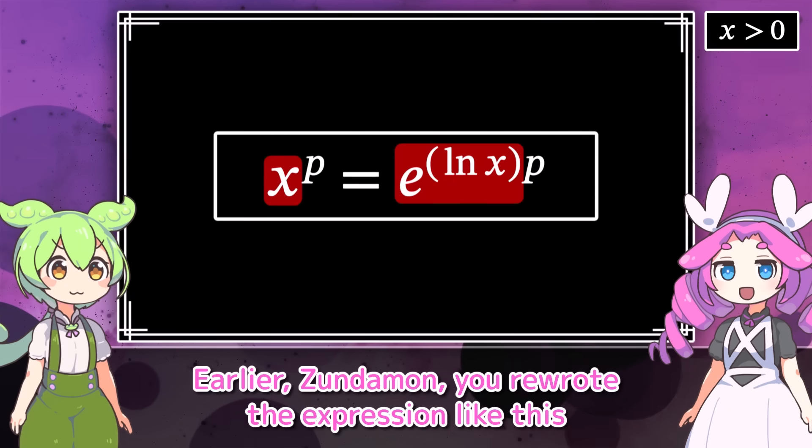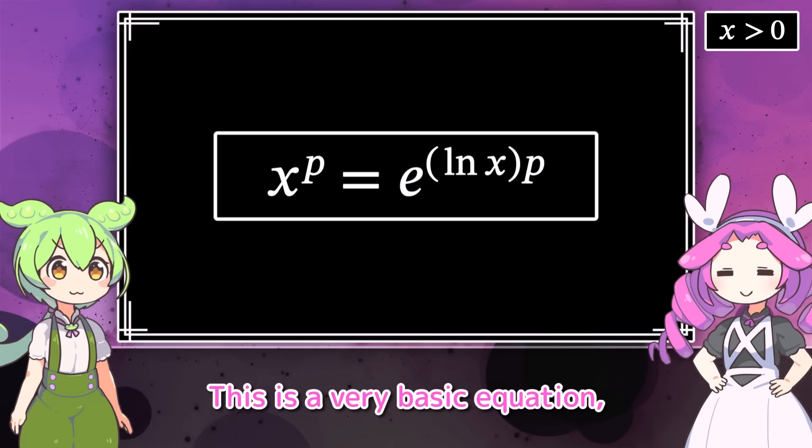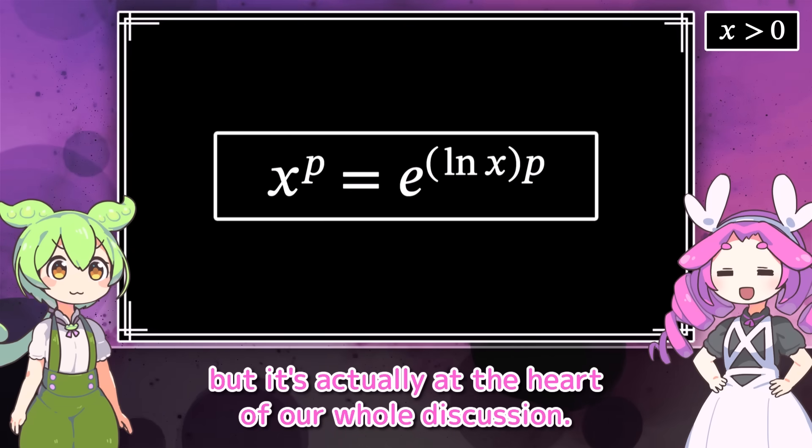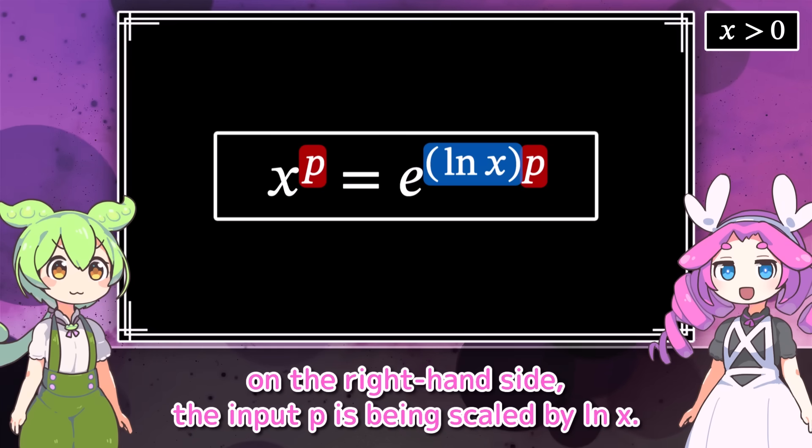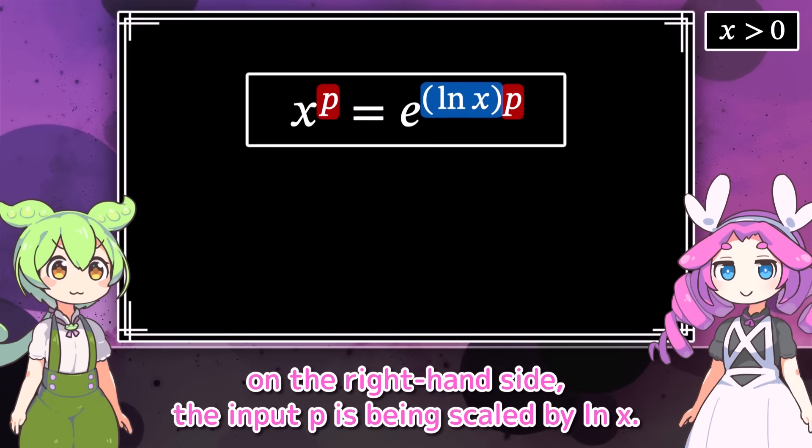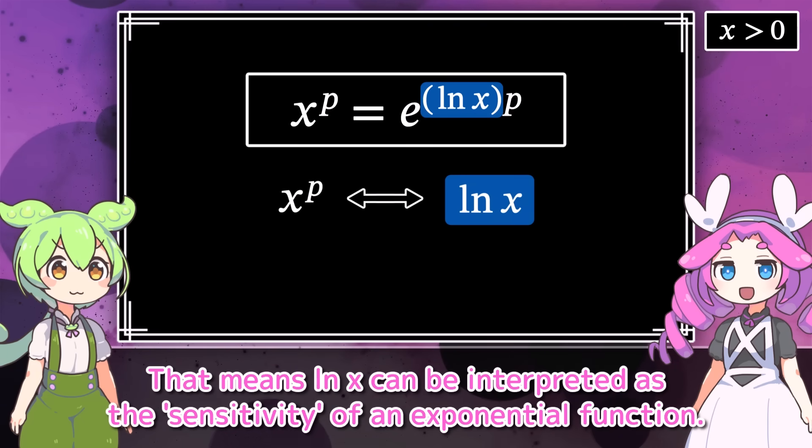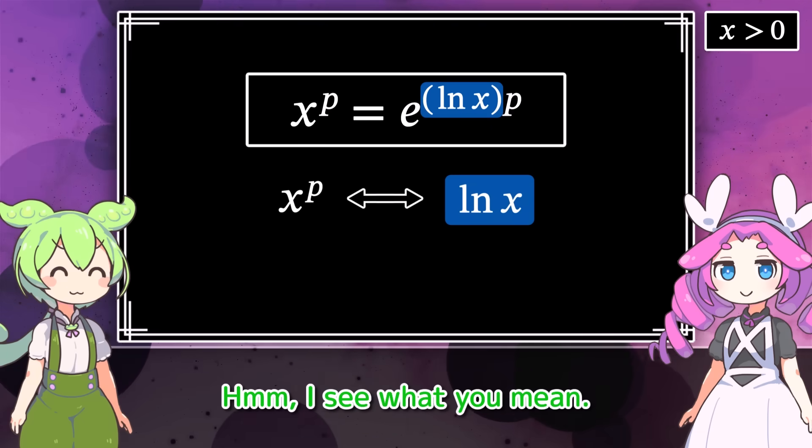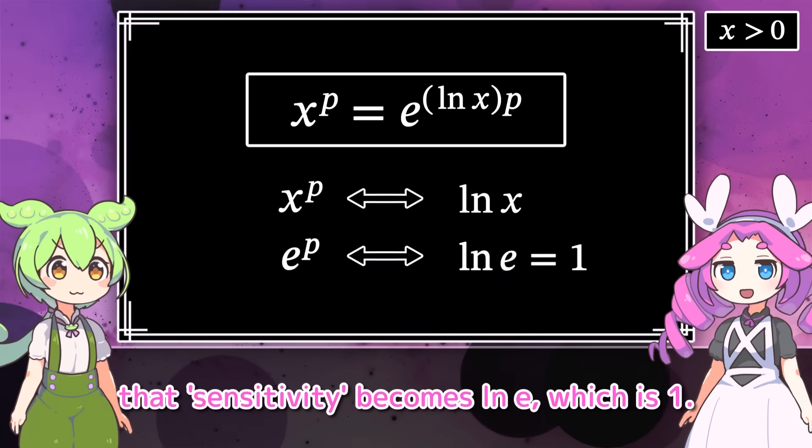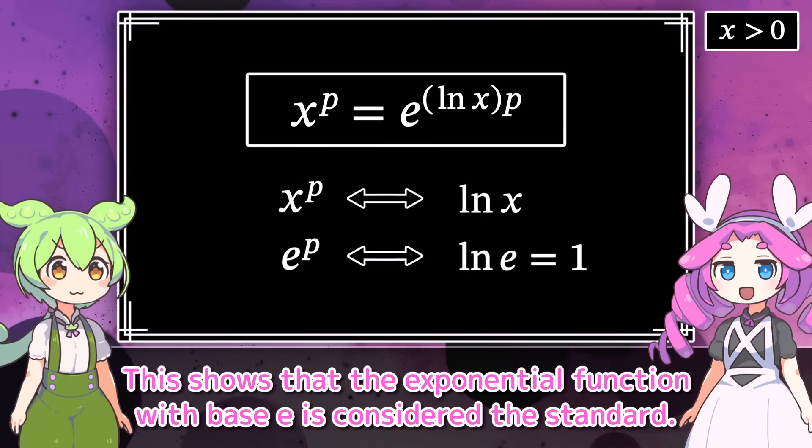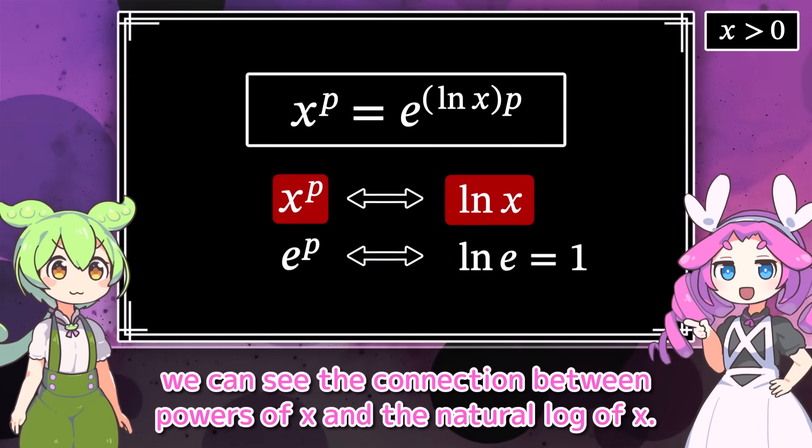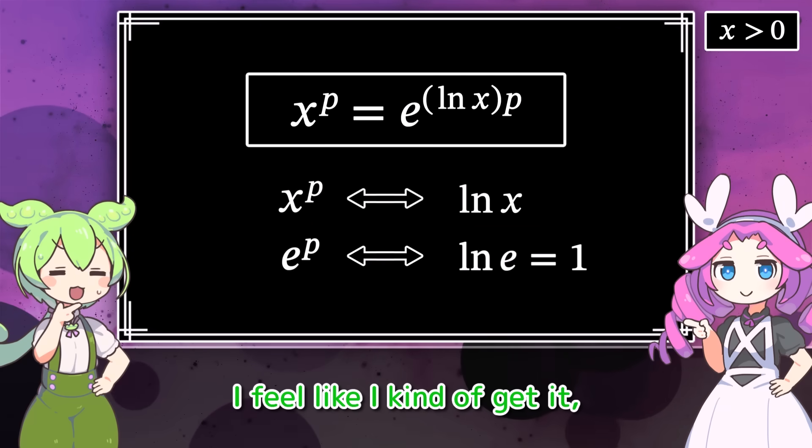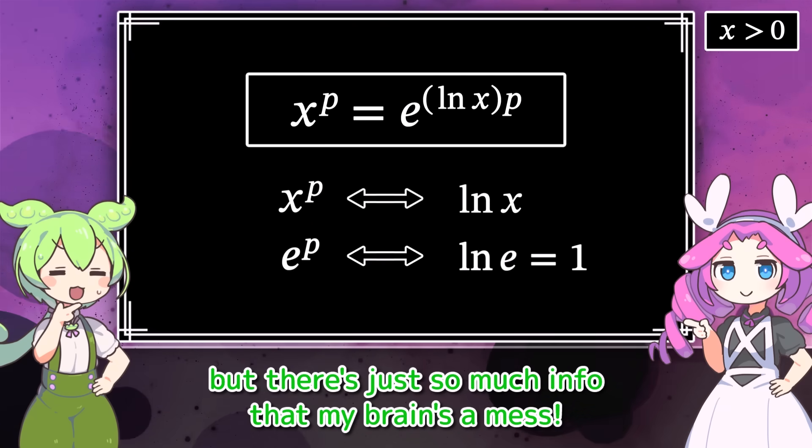Wait, was that a mistake? No, actually that's a very important point. Because rewriting it that way makes the appearance of the natural logarithm much more intuitive. Let me offer one interpretation here. Earlier, Zundamon, you rewrote the expression like this at the beginning of the differentiation. This is a very basic equation, but it's actually at the heart of our whole discussion. Uh, why is that? If we treat this as a function of p, on the right-hand side, the input p is being scaled by the natural log of x. That means the natural log of x can be interpreted as the sensitivity of an exponential function. Hmm, I see what you mean. And when x equals e, that sensitivity becomes the natural log of e, which is 1. This shows that the exponential function with base e is considered the standard. Yeah, that makes sense. And if we return to viewing them as functions of x, we can see the connection between powers of x and the natural log of x. I feel like I kind of get it, but there's just so much info that my brain's unmasks.